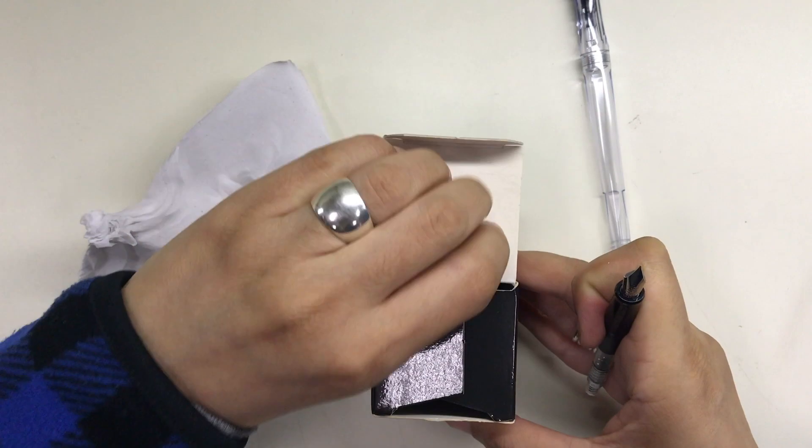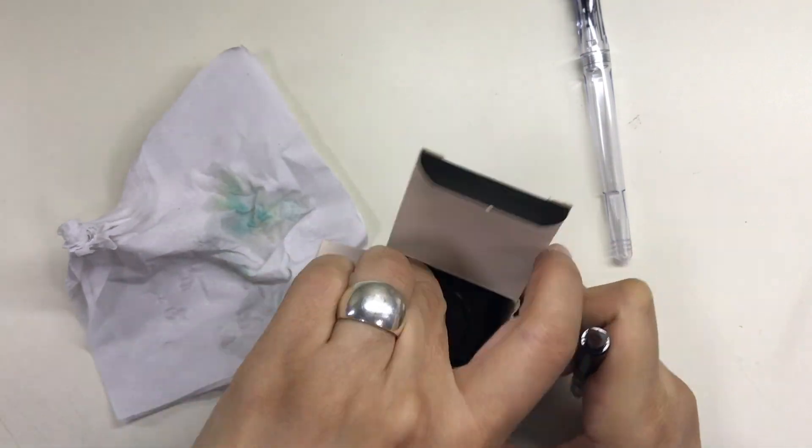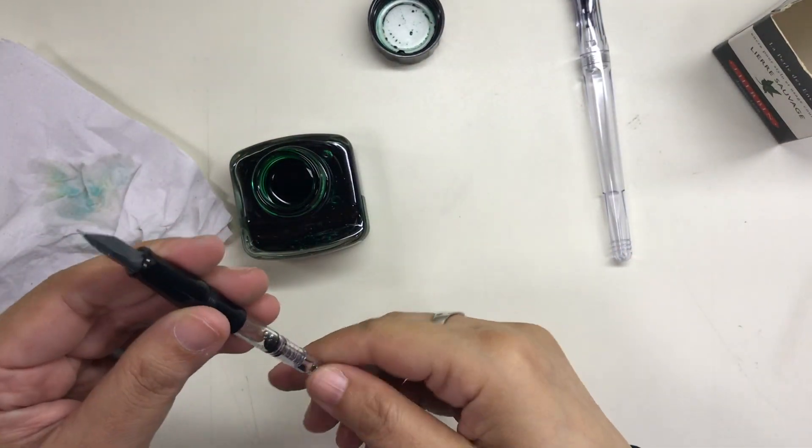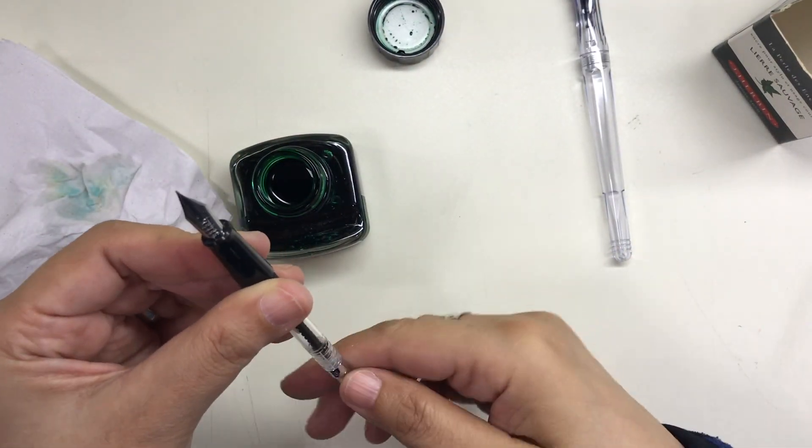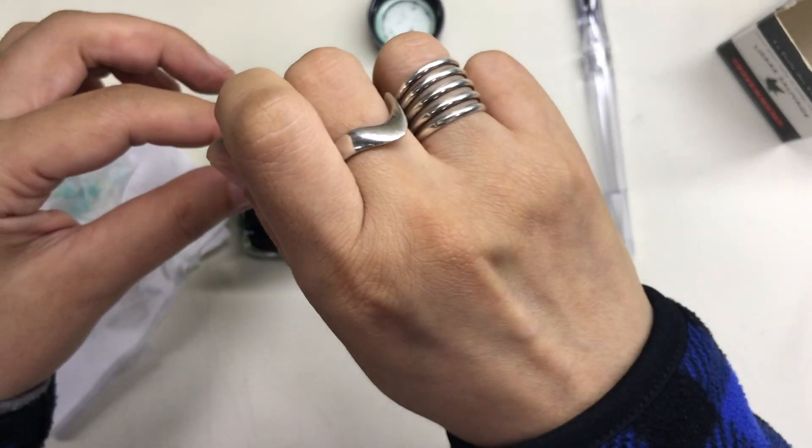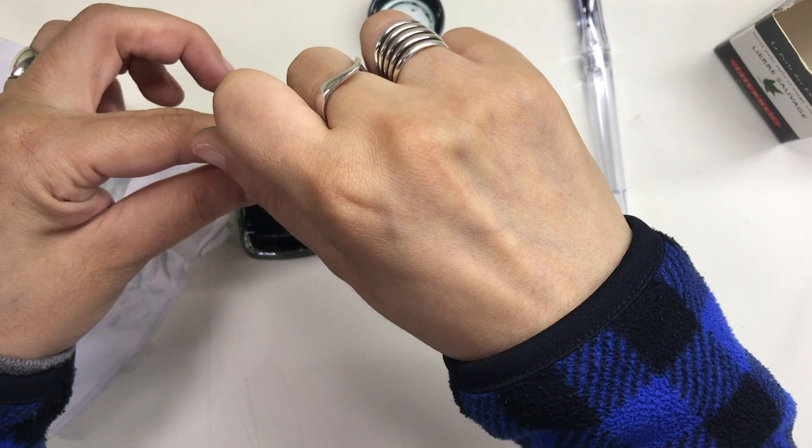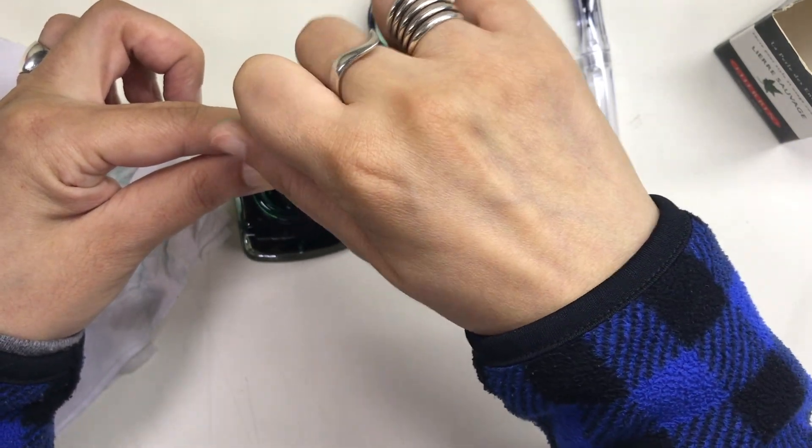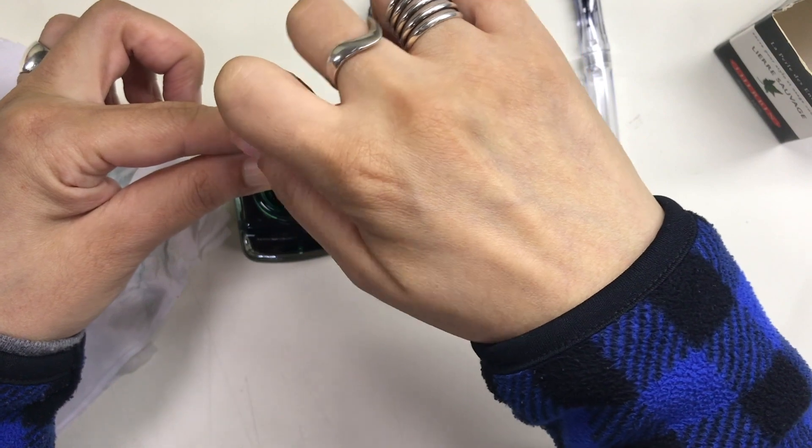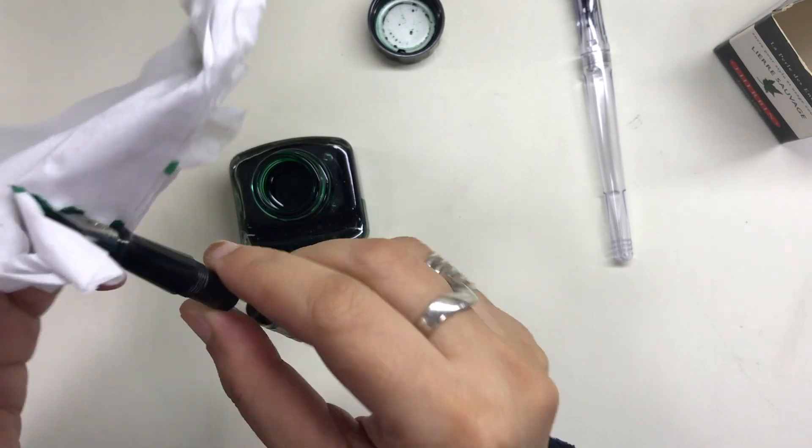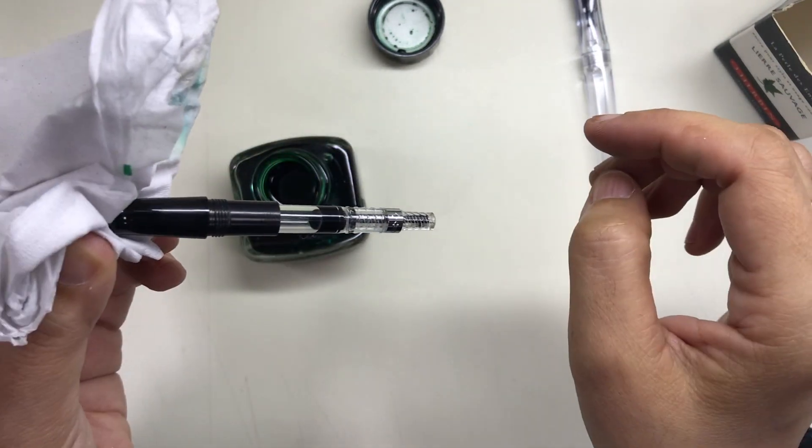And now it's time to fill the pen. This section that we swapped nibs with is actually this section for the green Metropolitan that I use in my planner, so we are going to fill the converter—it's the Con-40—with J. Herbin Vert Sauvage because this is the ink that I used to mark the tasks in my planner as done. I've also talked about this ink in a previous video and I will link it down below. It's a little tricky to fill the Con-40 because it's so tiny as you can see.